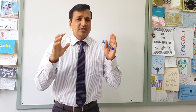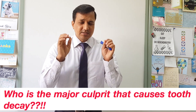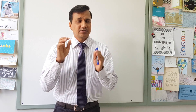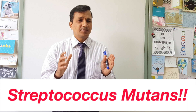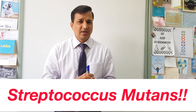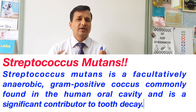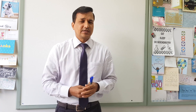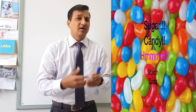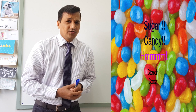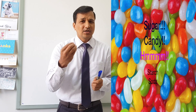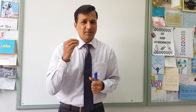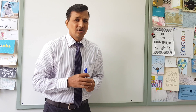One of the major bacteria considered a major culprit in causing tooth decay is Streptococcus mutans. What does Streptococcus mutans do? It thrives by consuming glucose from food — like sugary things, candy, soda, or starchy food. Anything that has glucose is used by the bacteria.